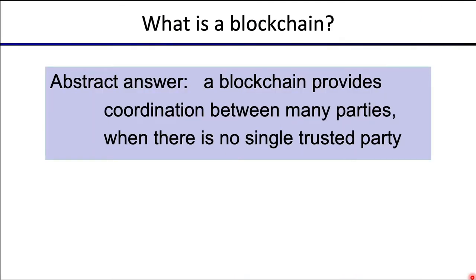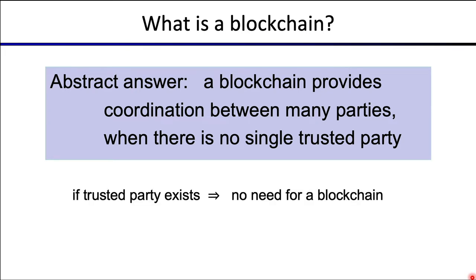Before we get started I want to quickly reiterate something from the previous lecture: basically what are blockchains for. Abstractly, a blockchain provides a way for multiple parties to coordinate when there is no single trusted party. They use the blockchain to perform all their coordination activities without relying on any single trusted party. In any environment where there does exist a party that everyone trusts, there is typically no need for a blockchain.